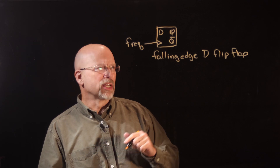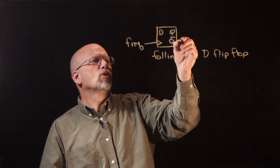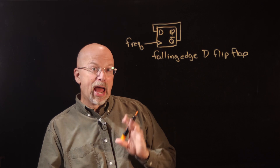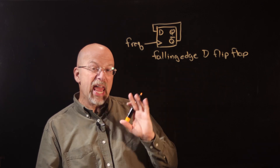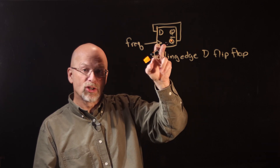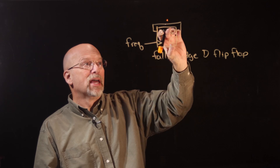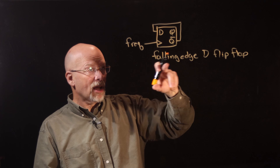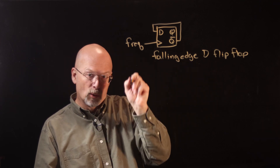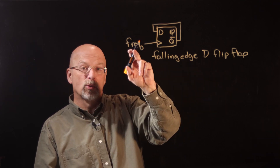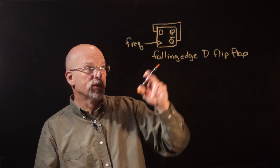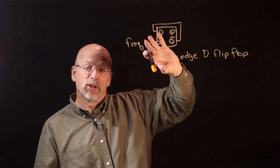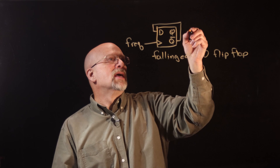The circuit itself was actually quite simple. All we did was we took Q-bar and routed it around to input into D. That way, every time we got an edge on this flip-flop, it would flip the value that was on Q. For example, a falling edge — a one-to-zero transition — every time there was a one-to-zero transition on that frequency, we would grab the opposite of what's stored on Q, and it would flip.